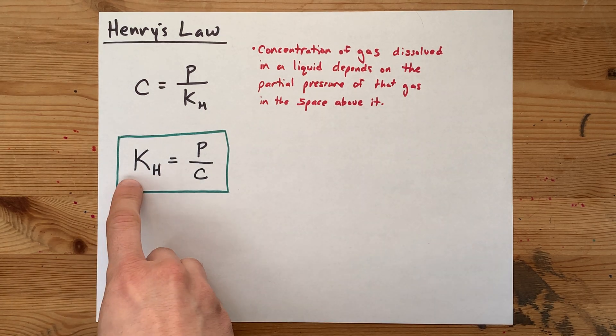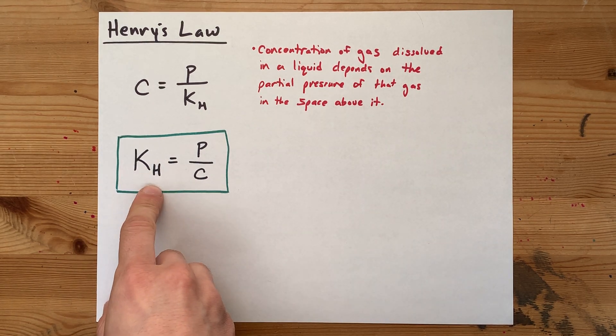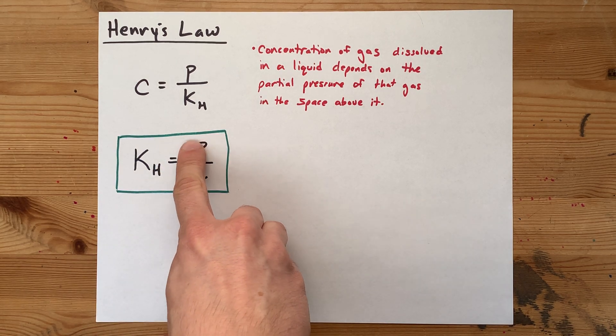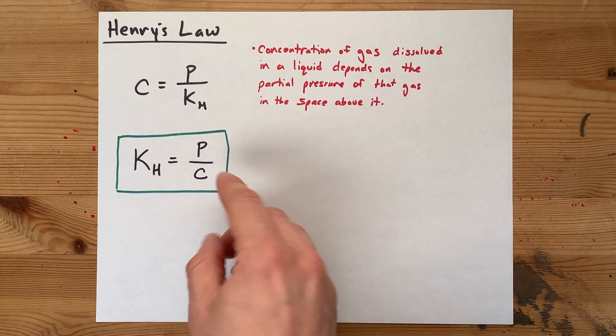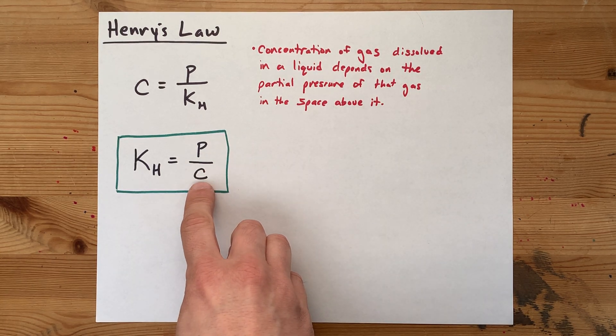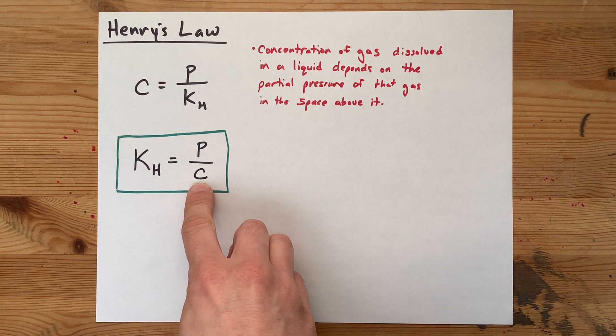The classic equation here is that the Henry's Law constant, capital K subscript H, is the pressure, the partial pressure of that gas in the air above the liquid, divided by the concentration of the gas that can dissolve in the liquid.